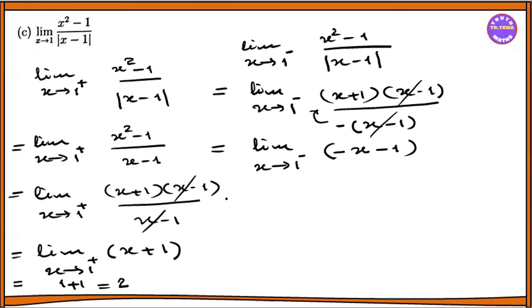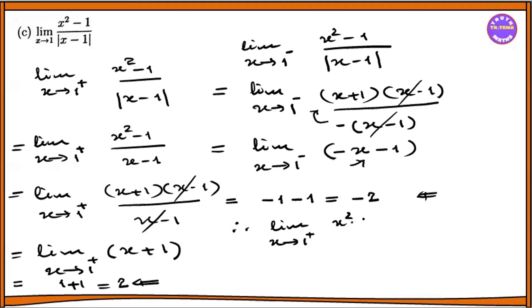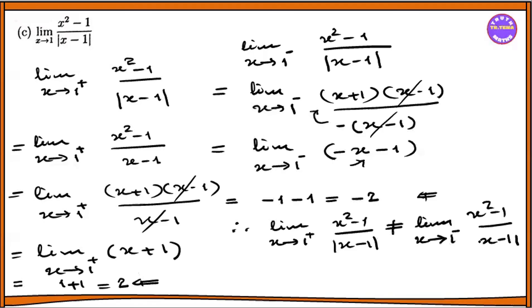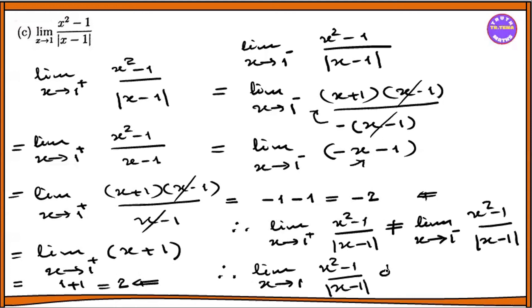The right-hand limit equals 2 and the left-hand limit equals minus 2. Therefore, the limit as x tends to 1 plus of x squared minus 1 divided by modulus of x minus 1 is not equal to the limit as x tends to 1 minus. Therefore, the limit of x squared minus 1 divided by modulus of x minus 1 as x tends to 1 does not exist.